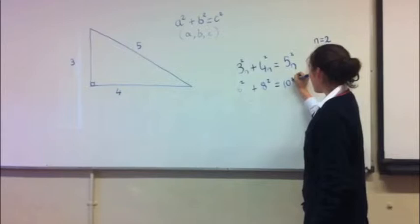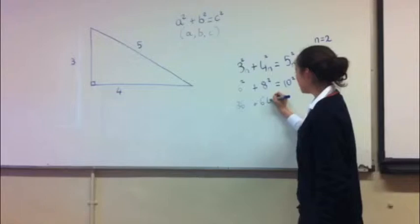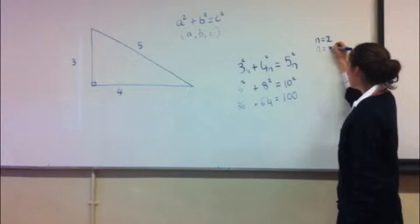To check if that's correct, it's 36 plus 64 equals 100. We can do this if n equals three, if n equals four, and so on and so on.